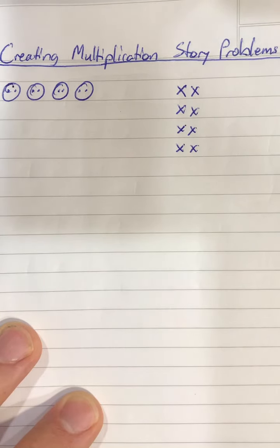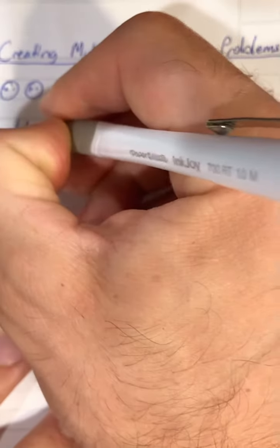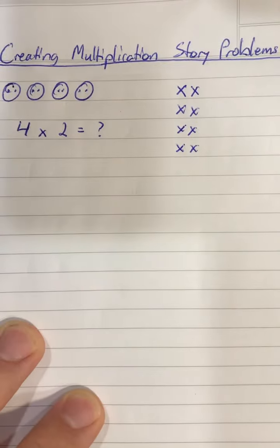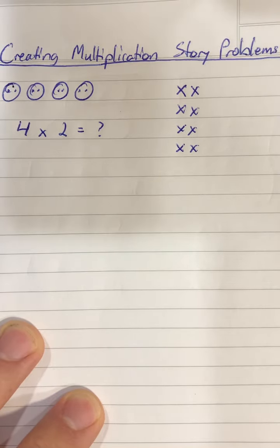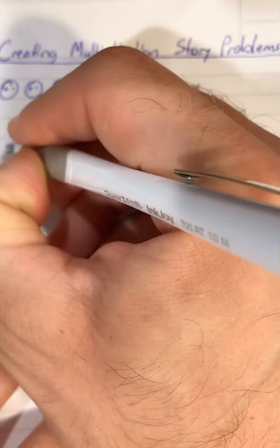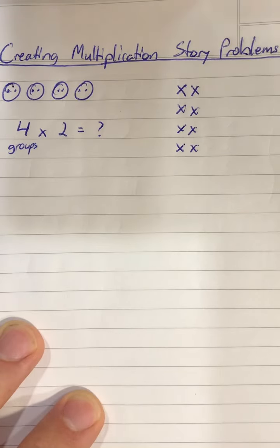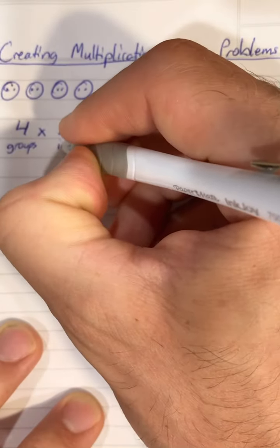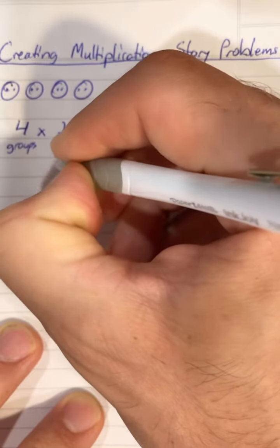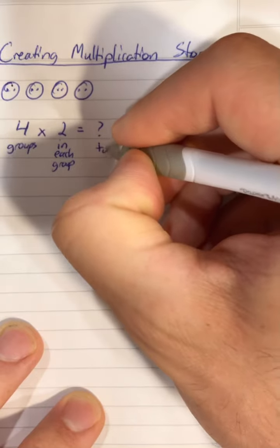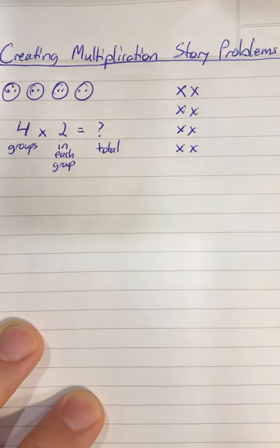And if you represented it with a labeled number sentence, then you would have labeled the four as the groups, the two as the amount in each group, and the question mark as the total.